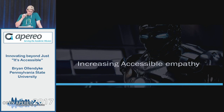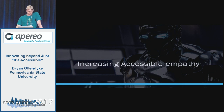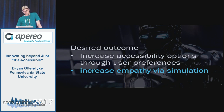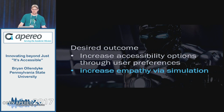So these are three mini-talks about accessibility. The first is increasing accessible empathy. The desired outcome was we want to increase the accessibility options through user preference, but then we also want to increase empathy for people of different conditions through simulation.